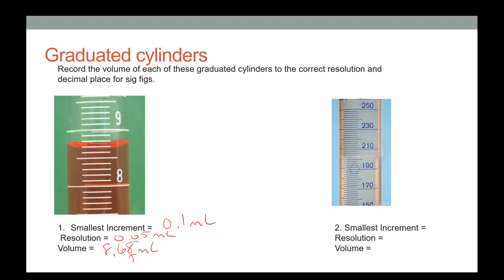Counting the lines, each increment is 2 milliliters. Dividing by 2 gives a resolution of 1 milliliter, so when reading this cylinder, I need a digit in the ones place.